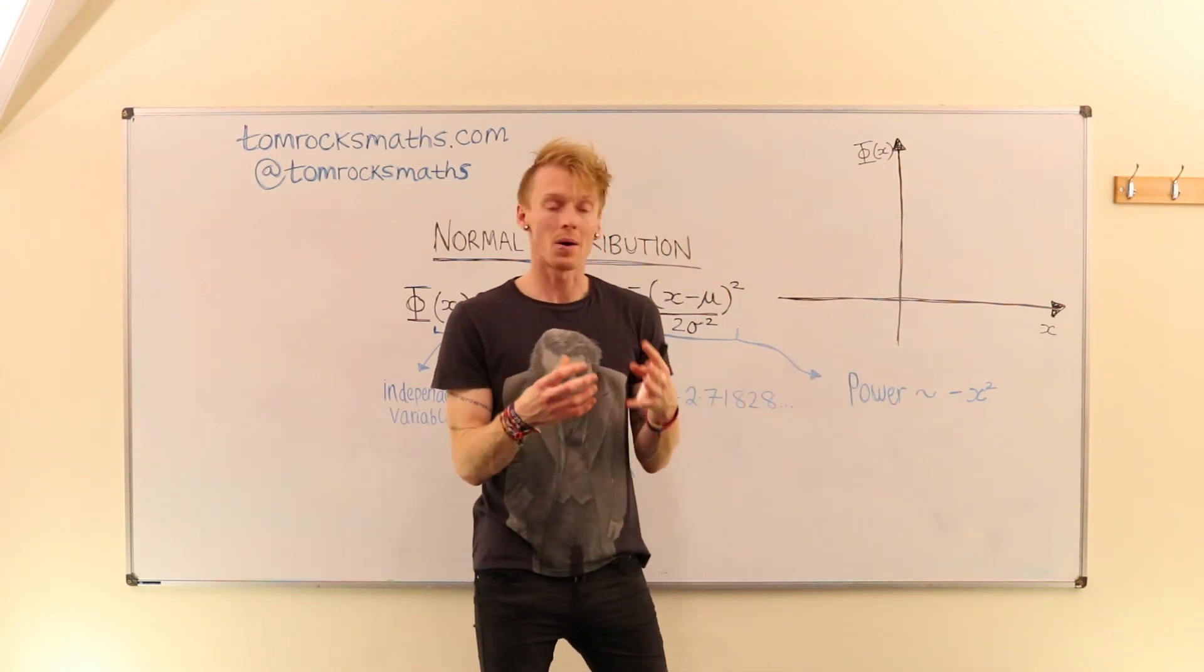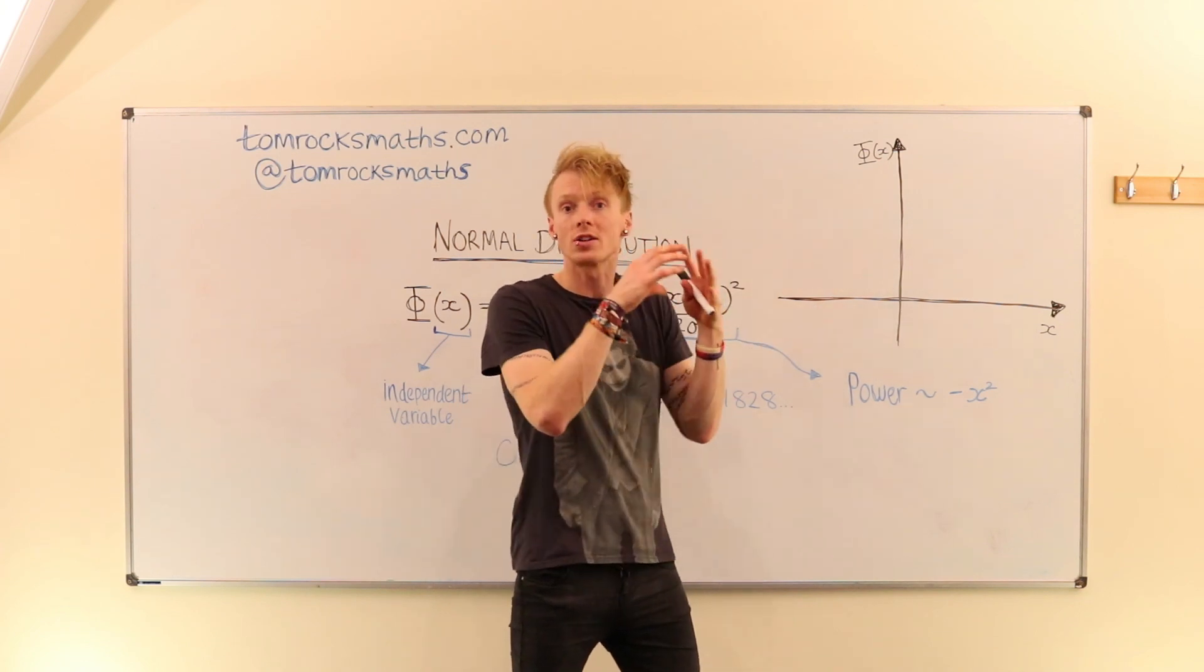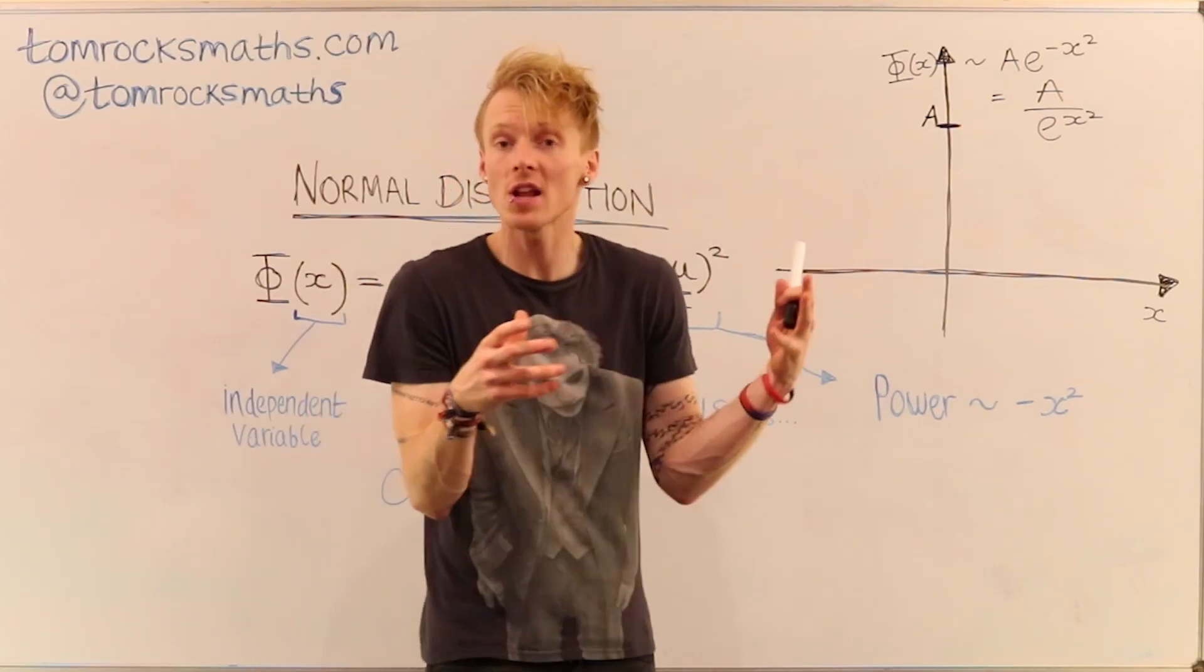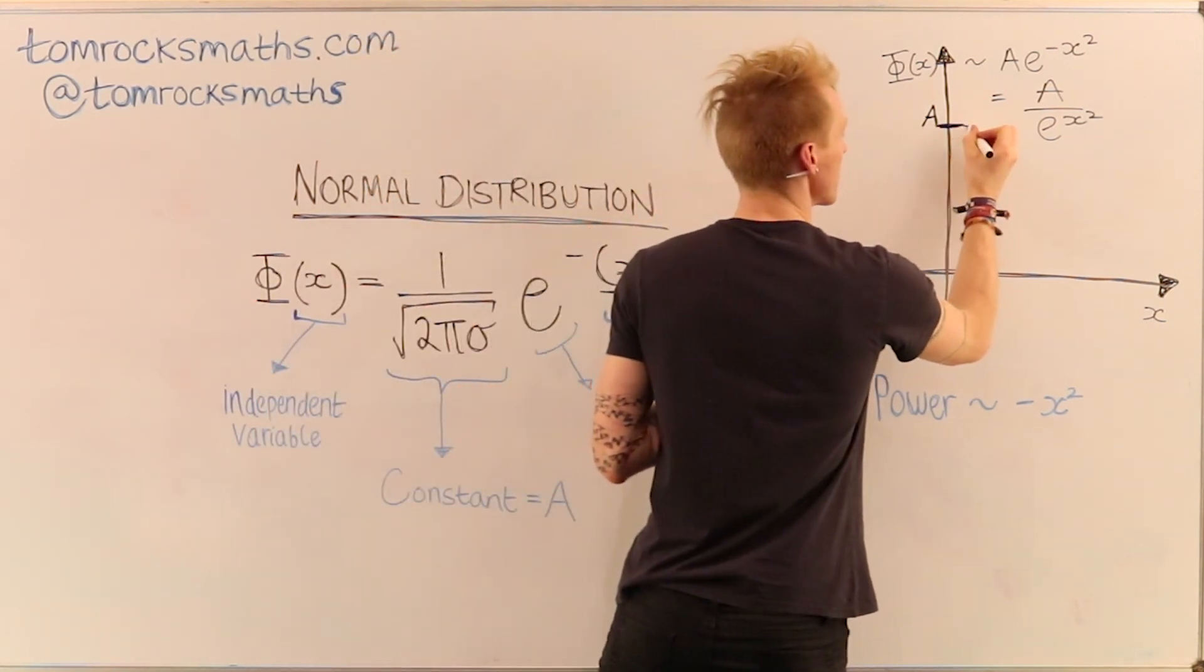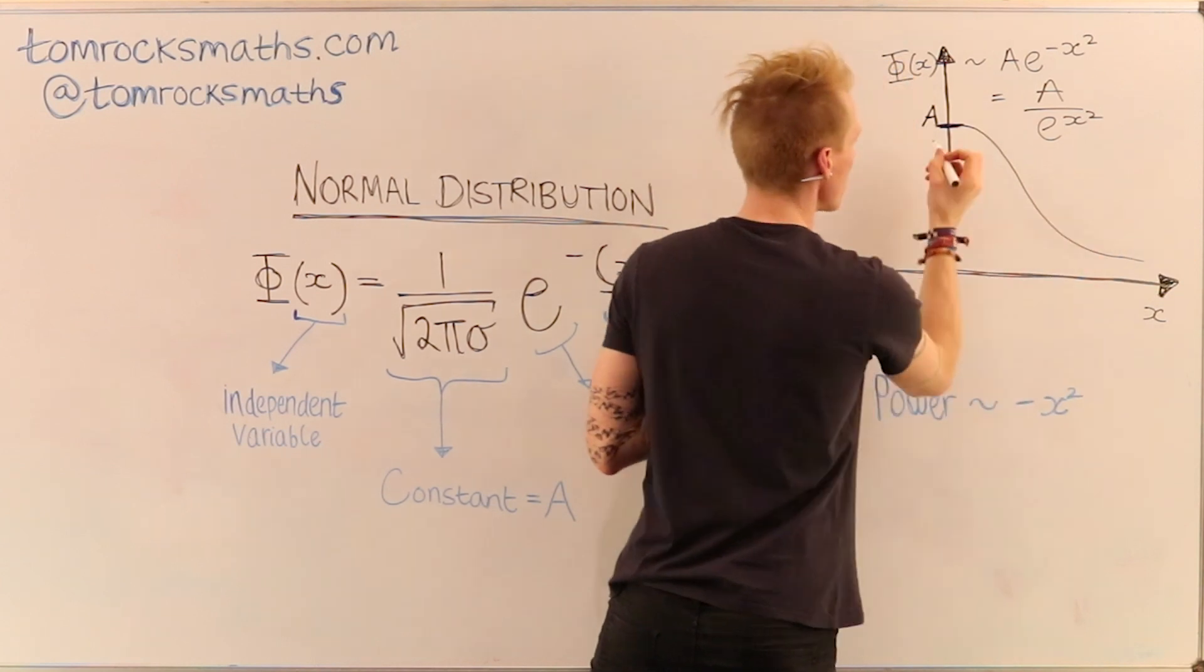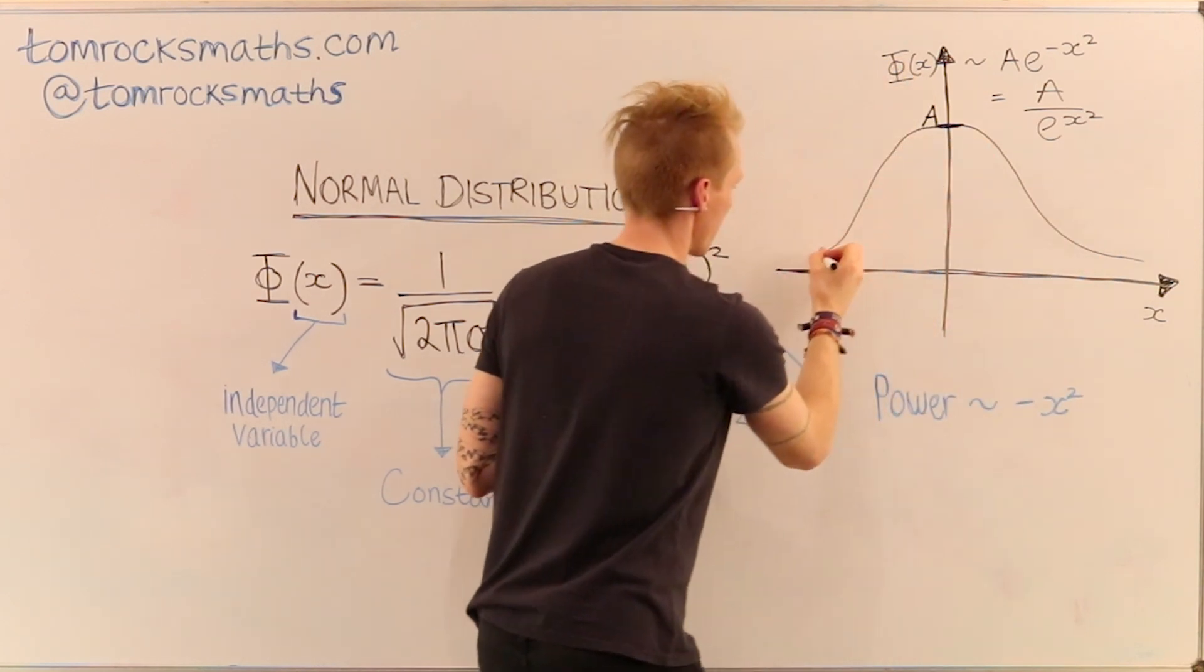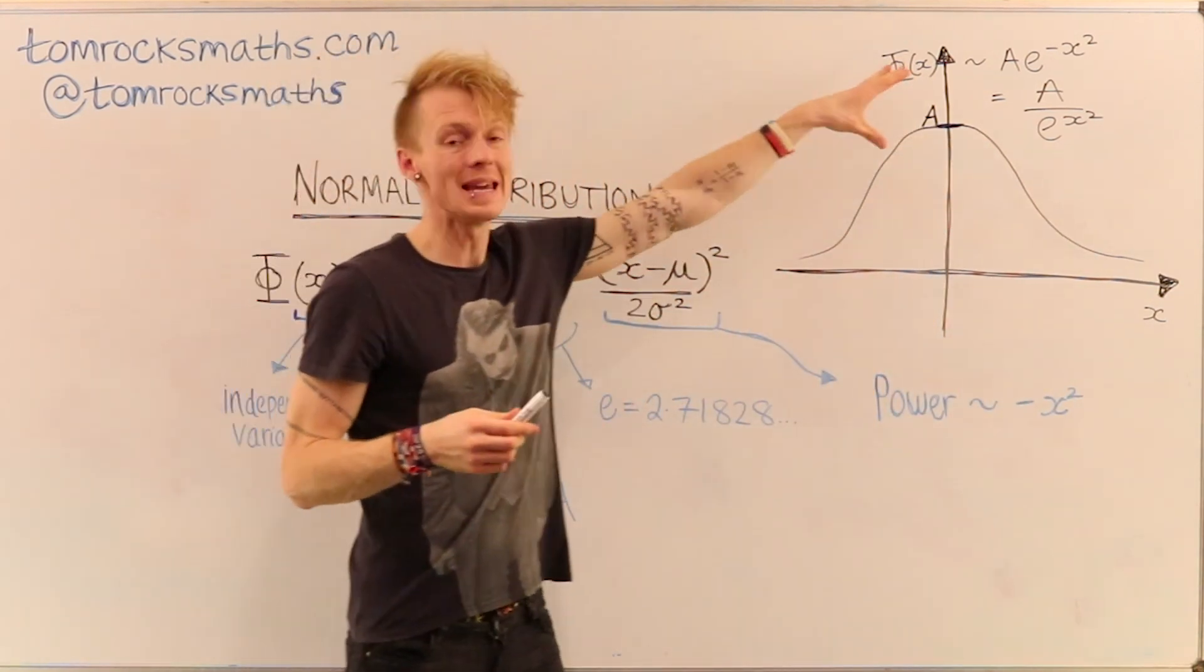And this now allows us to draw a rough plot of what the function looks like. And so plotting our function, what we actually have is what's known as this lovely bell-shaped curve. Because it kind of looks like a bell. There you have a peak in the middle.